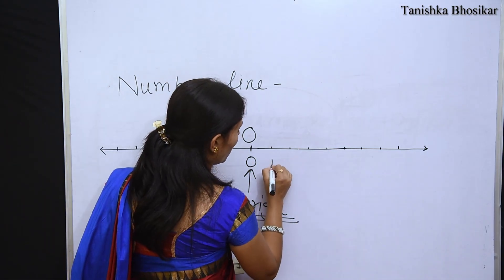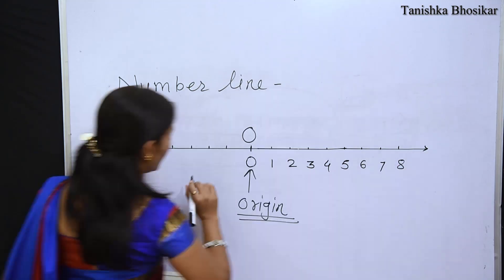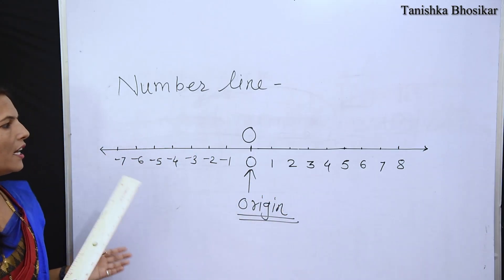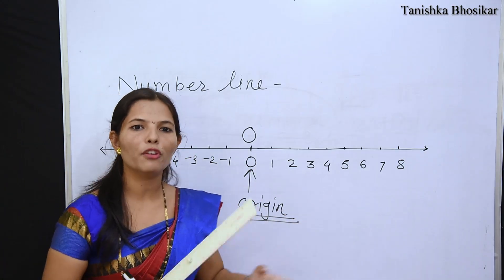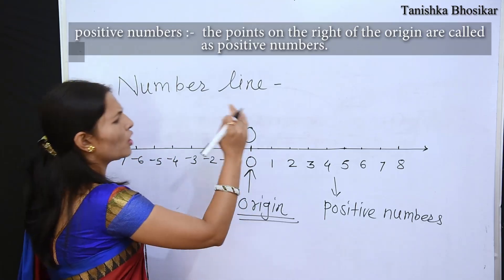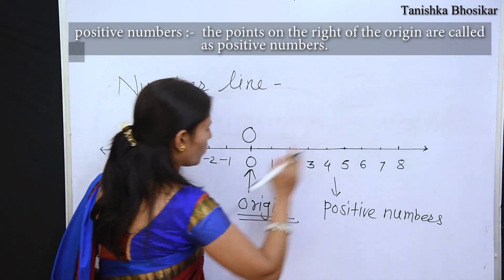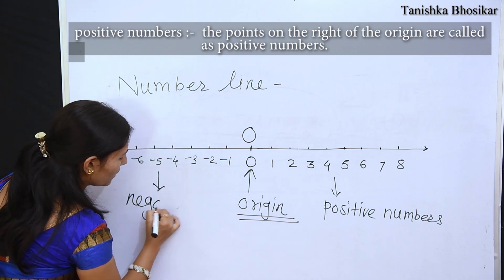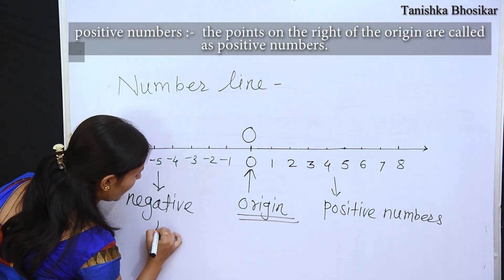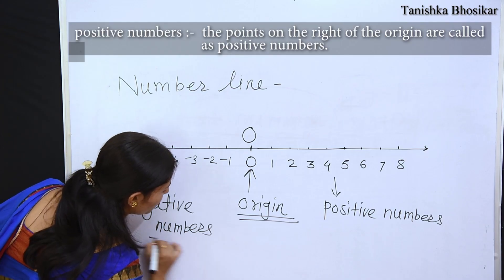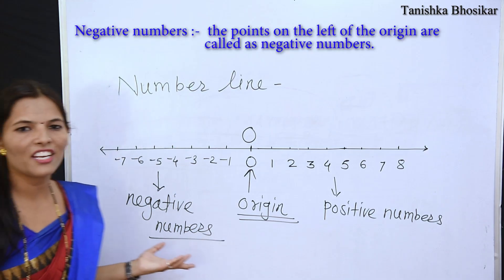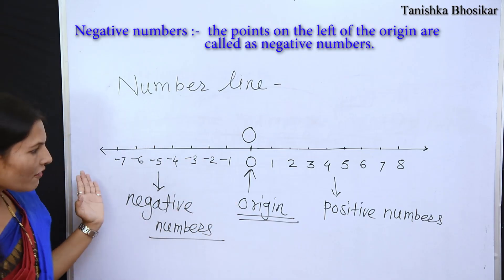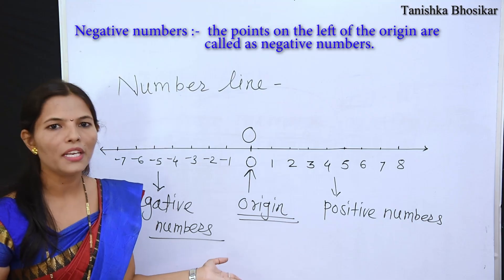Now let's show 1, 2, 3. In your exam there are positive numbers and negative numbers. The definition of positive numbers: the points on the number line which are to the right side towards the origin are called as positive numbers. The definition of negative numbers: the points on the number line which are towards the left side of the origin are called as negative numbers.